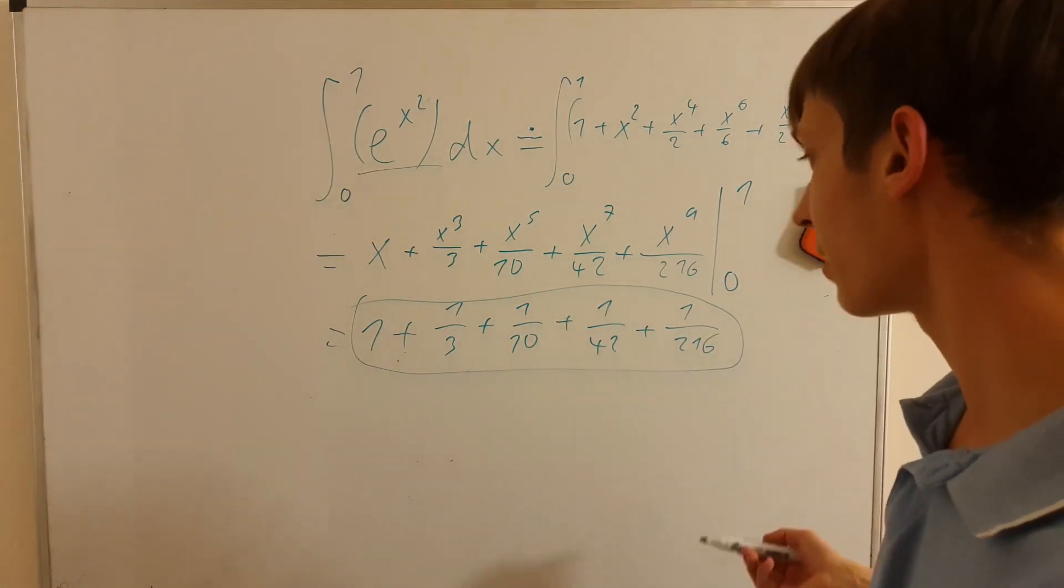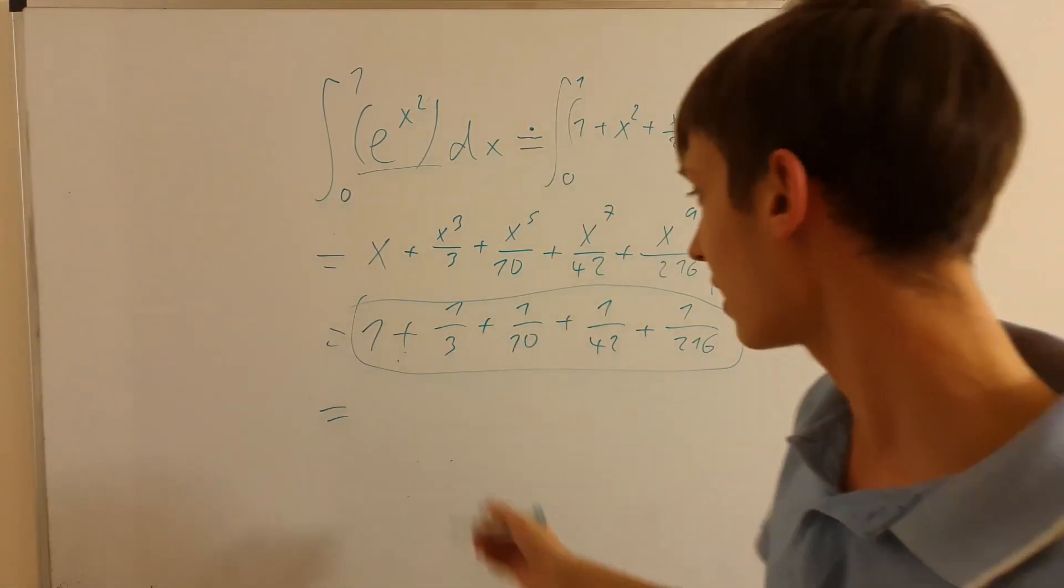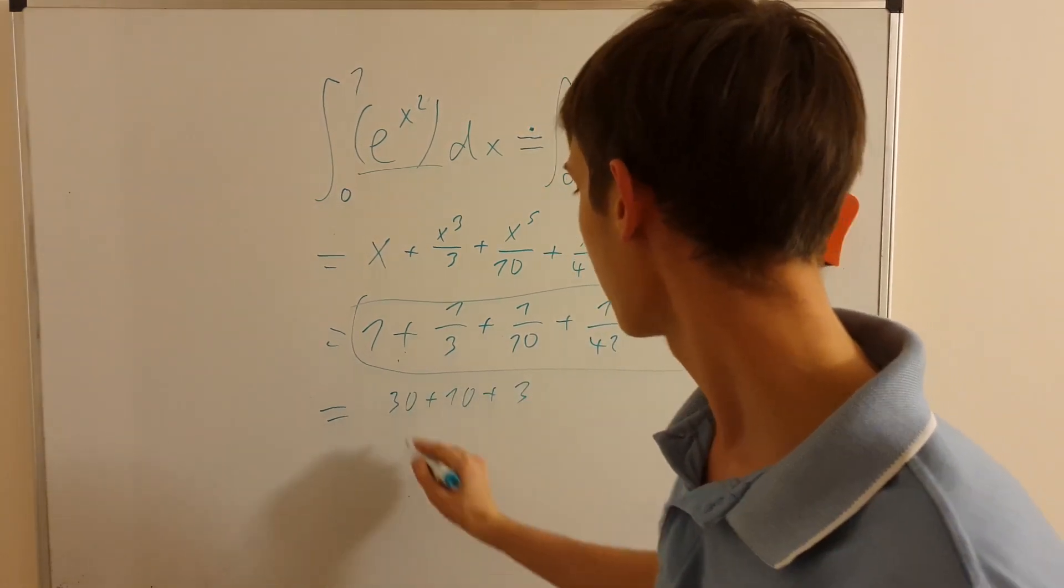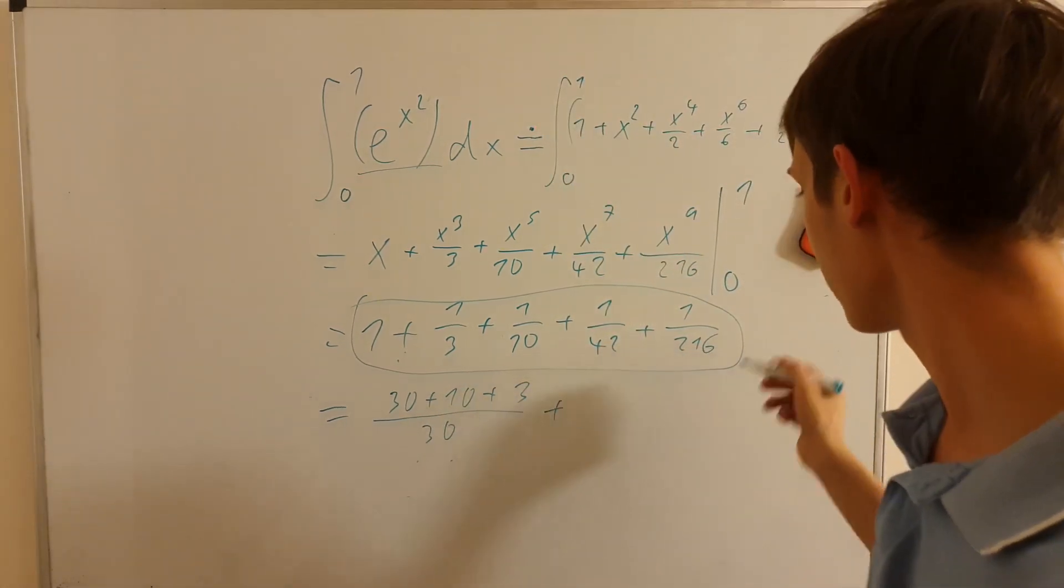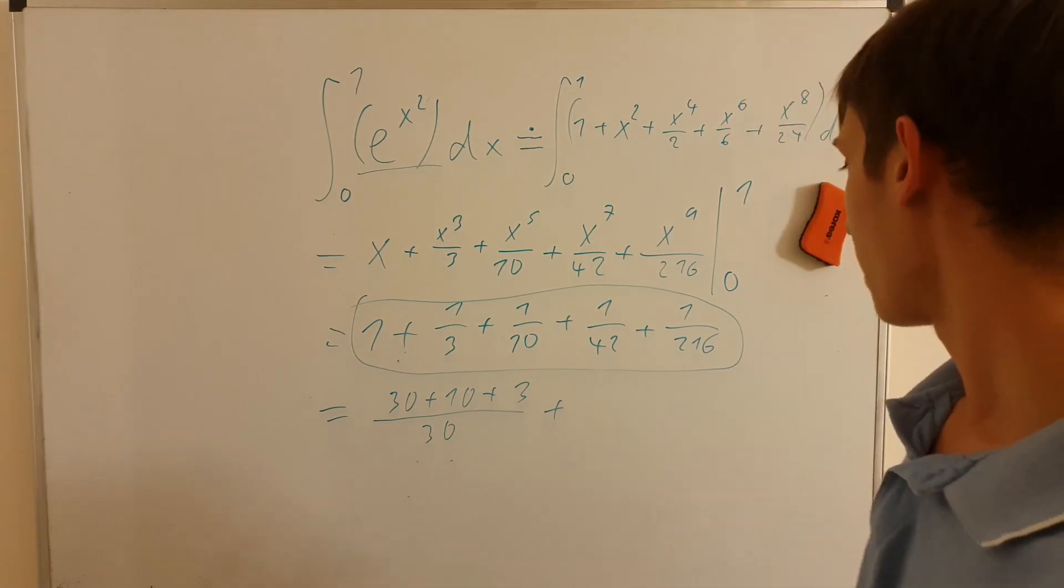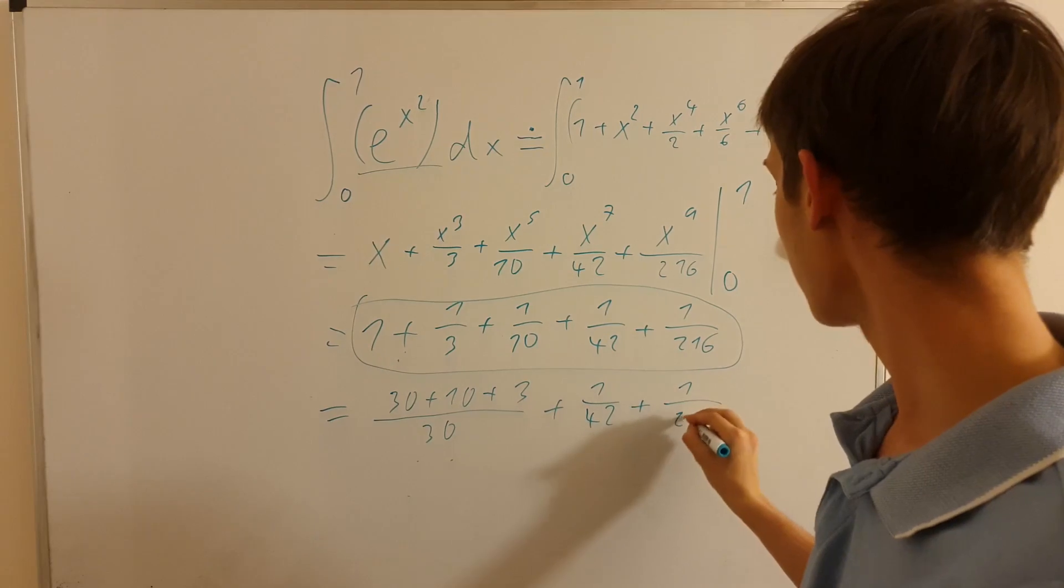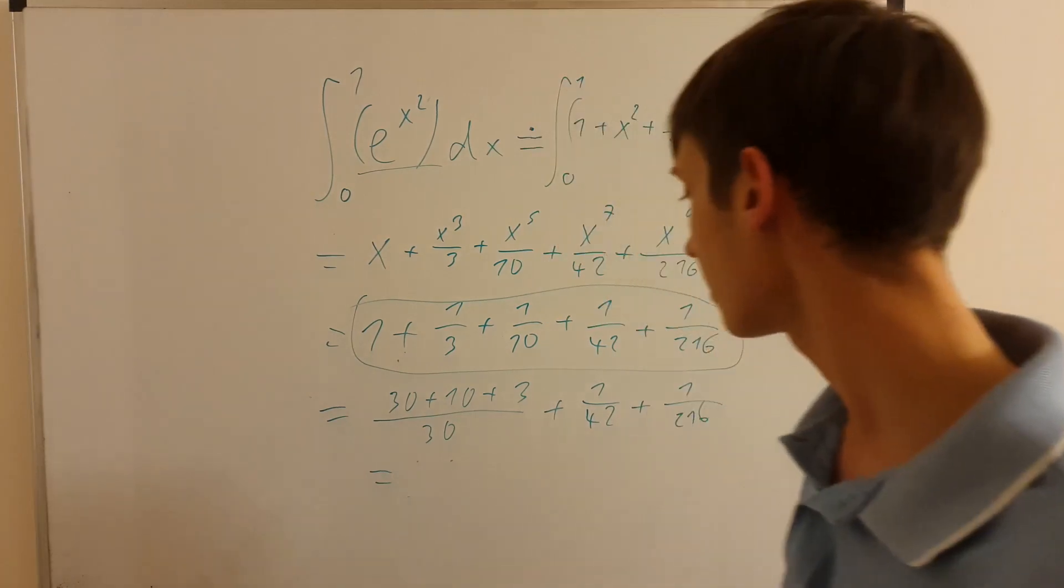I can do common denominator for, for example, the first 3. That will be 30 plus 10 plus 3, over 30. And then, the next ones, well, that's not so easy to create a common denominator. But nevertheless, they will be far smaller increments. But they will still add to more accuracy.